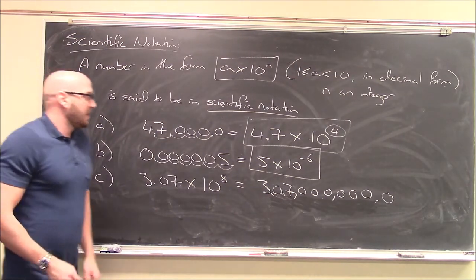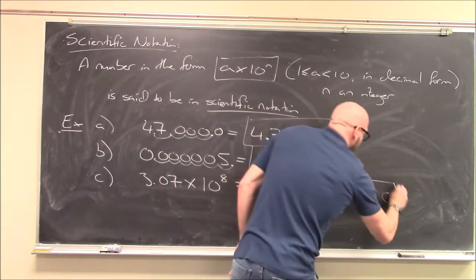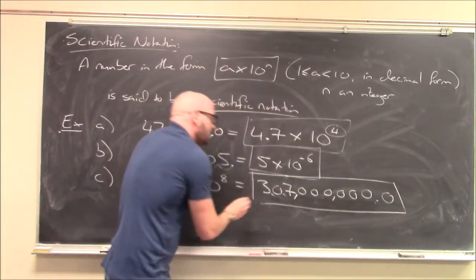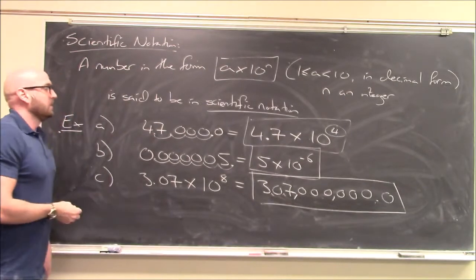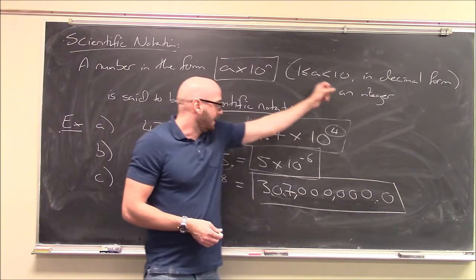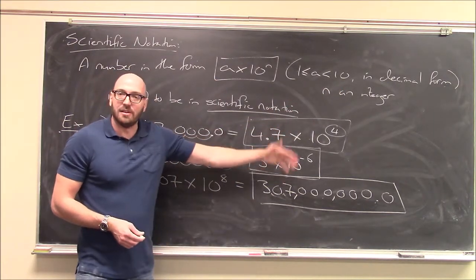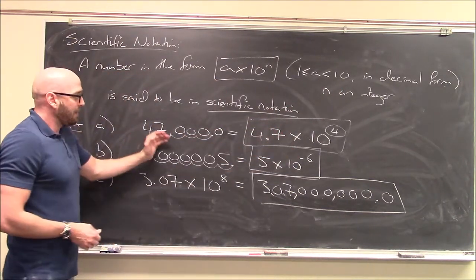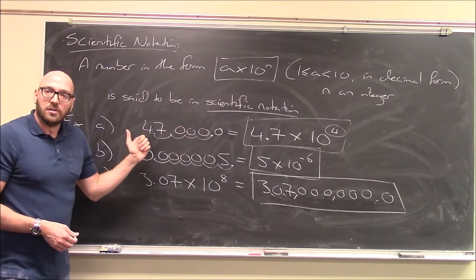So, not a whole lot to this scientific notation stuff. But you should be aware of what it is and how it works. It's just rewriting your number in this form. It's some number between 1 and 10 times 10 to an exponent. And that exponent tells you how many places you move the decimal, either to the right or to the left.